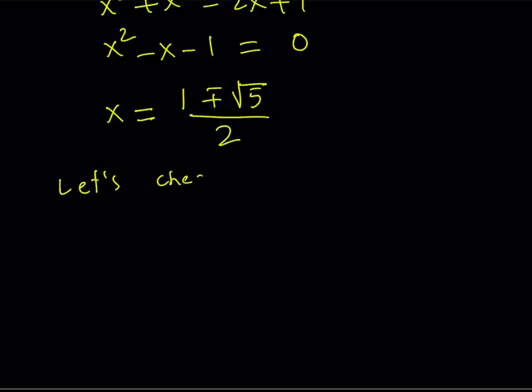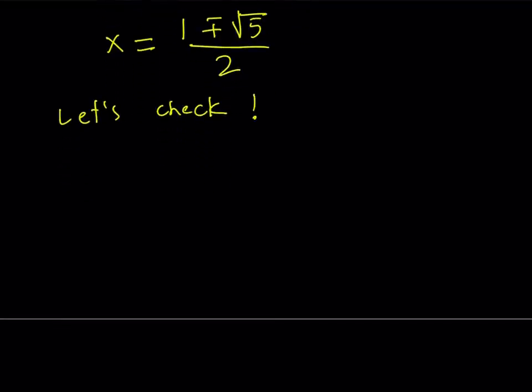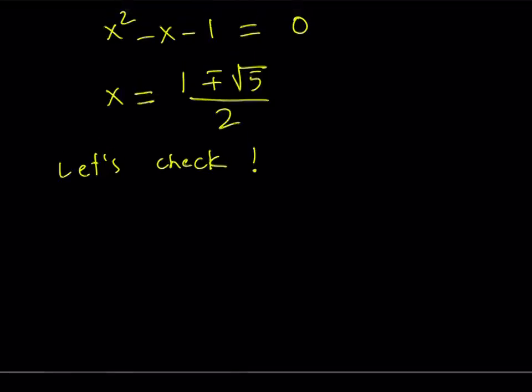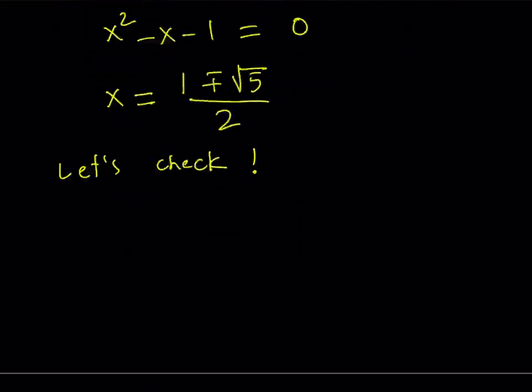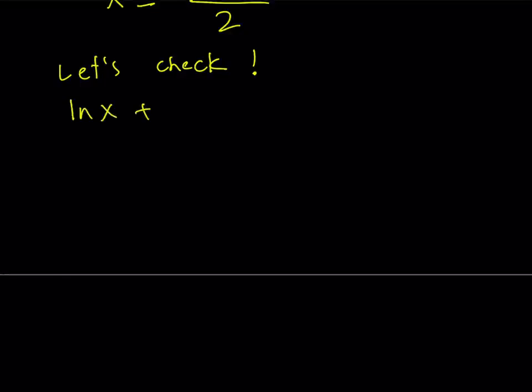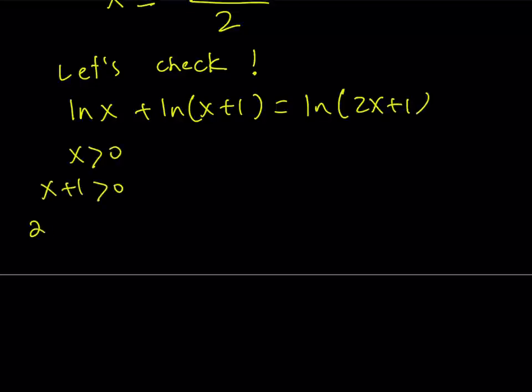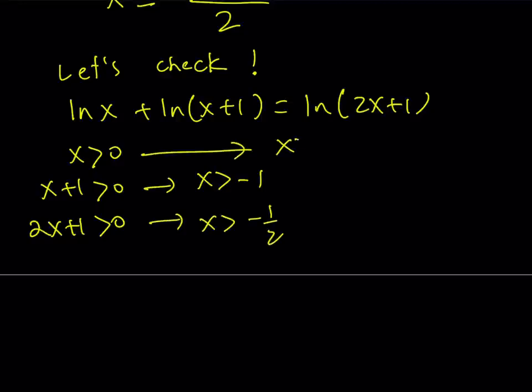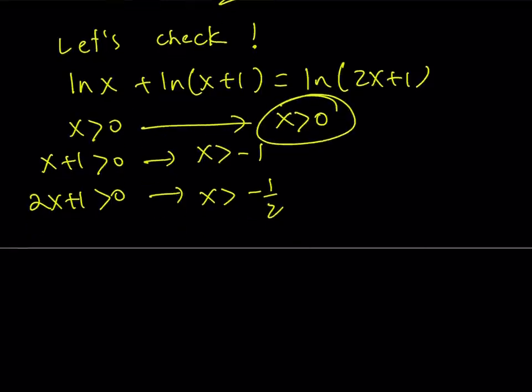How do you check the solutions to a log equation? You check the domain, or you can just plug it in. I'm not sure if you want to plug these numbers in. I will check the domain. So we have ln x plus ln(x+1) equals ln(2x+1). So now I know that x must be positive, x+1 must be positive, and 2x+1 must be positive. In order for this equation to have real solutions, all of these conditions must be met. But notice that this implies x is greater than -1, this implies x is greater than -1/2, but x > 0 is basically going to cover everything, because we're looking at the intersection.